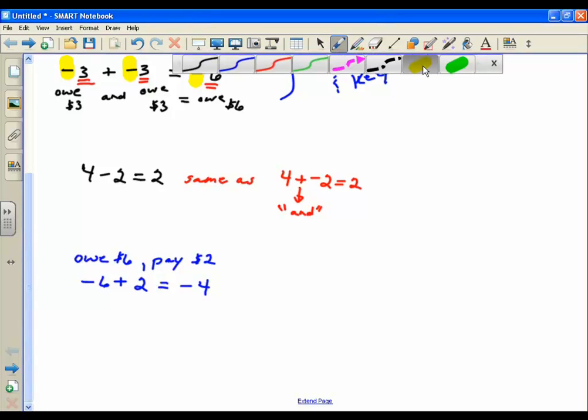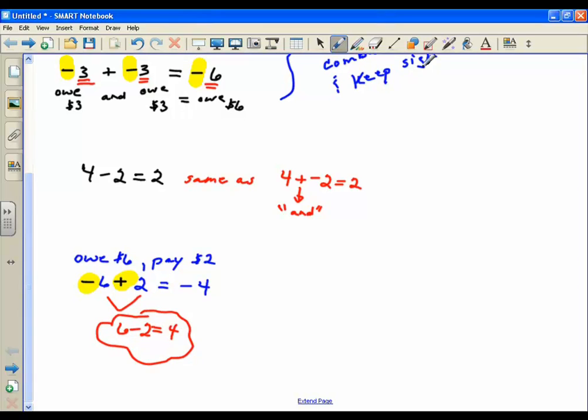Notice that with these two problems, you had opposite signs. So for example, here you have a negative and a positive. And you subtracted them, didn't you? You said 6 minus 2 is what you probably thought in your brain is equal to 4. And then you kept the sign of the bigger one.